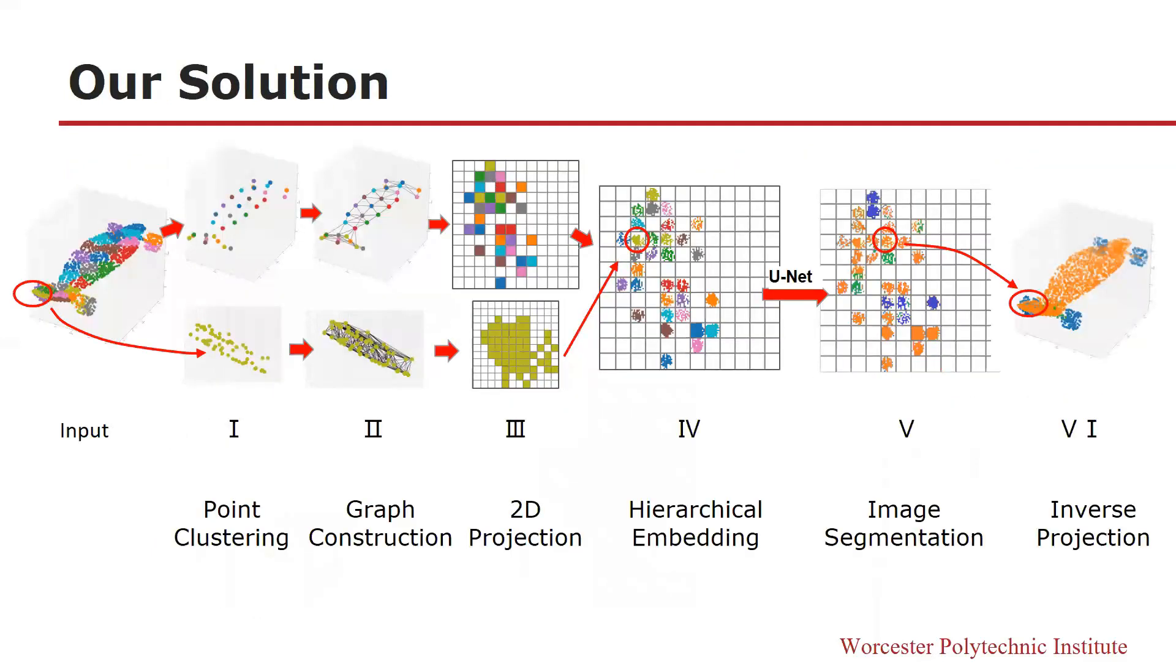Here is the overview of our solution, which has six steps. Firstly, we separate point cloud into several clusters. Secondly, we generate a graph connecting the points in each point cluster and a set of cluster centers.